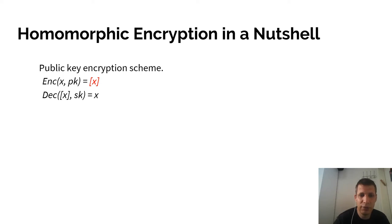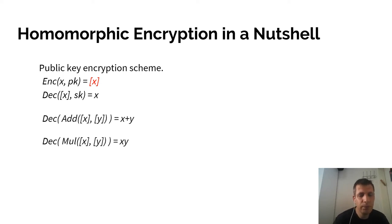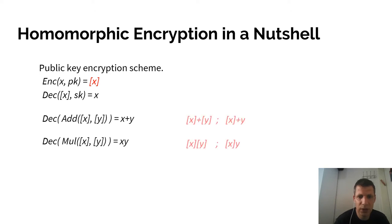In homomorphic encryption, we have two more functions, add and mul. The add function takes two ciphertexts X in brackets and Y in brackets, and the output, if decrypted, gives you back X plus Y. We denote X in brackets plus Y in brackets as the addition of the ciphertext of X and the ciphertext of Y. If we write X in brackets plus Y, it means we need to encrypt or encode Y first and then apply the add function.